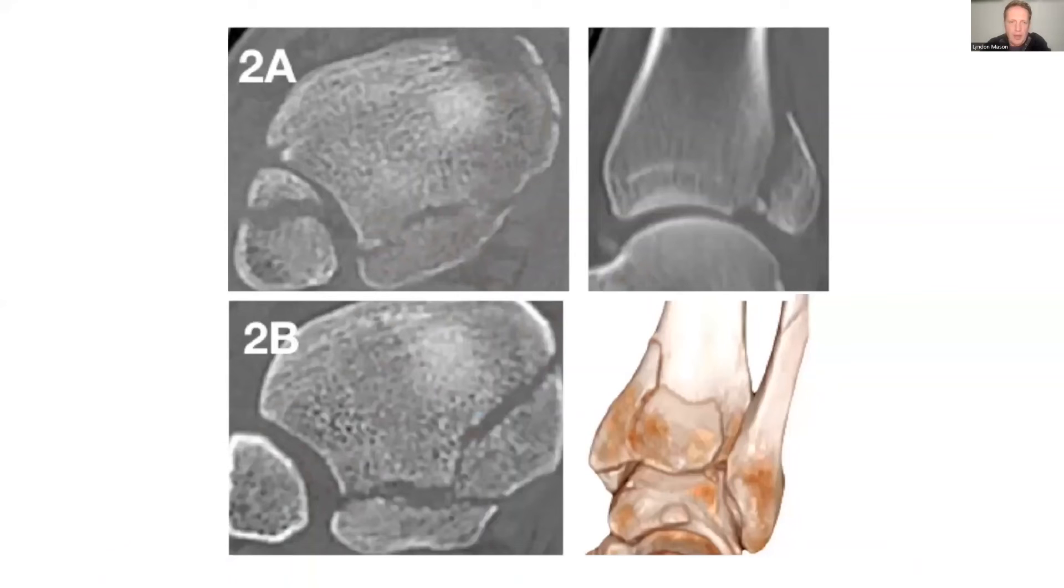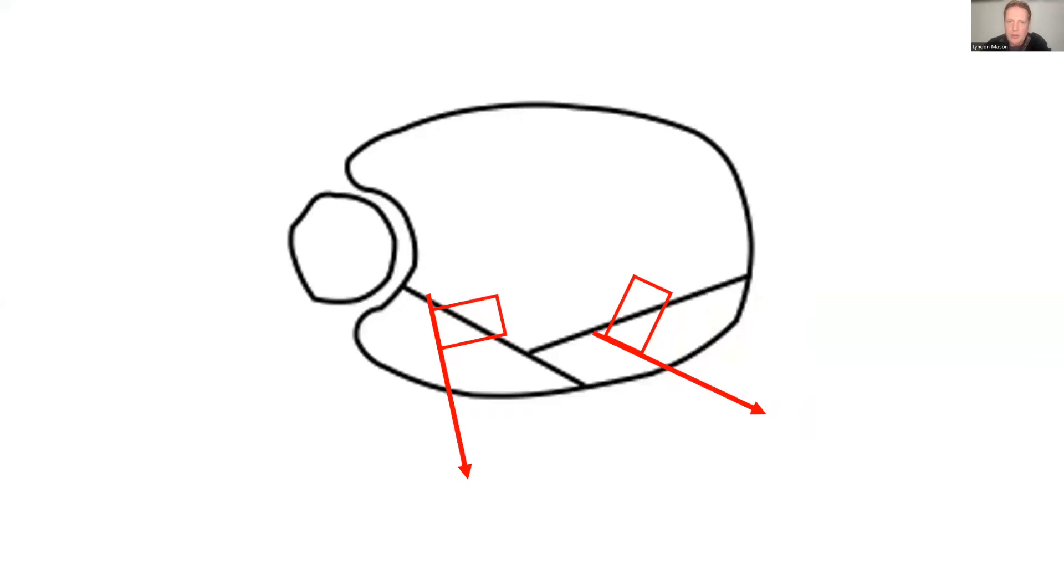You can see here also the impaction fragments. If you get any impaction fragments in the 2A, it's often on the lateral side. With the 2B, it often sits in between your 2A and 2B—you've got an impaction fragment there. This is the rotation, this is what we see with the Type 2B. You can see the rotational force.